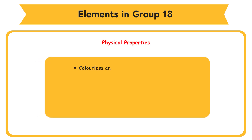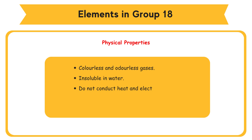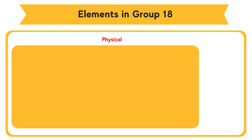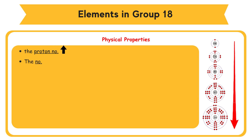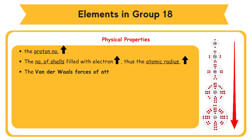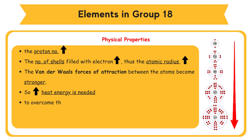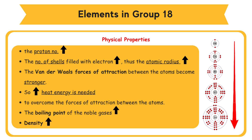Physical properties: colorless and odorless gases, insoluble in water, do not conduct heat and electricity, and have low boiling point and density. When going down Group 18, the proton number increases, the number of shells filled with electrons increases, thus the atomic radius increases. The Van der Waals forces of attraction between the atoms become stronger, so more heat energy is needed to overcome the forces of attraction. The boiling point and density of the noble gases increase down the group.